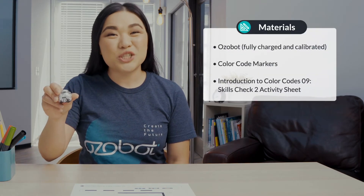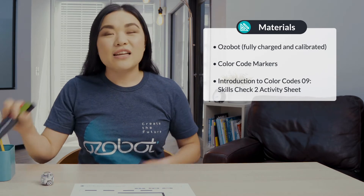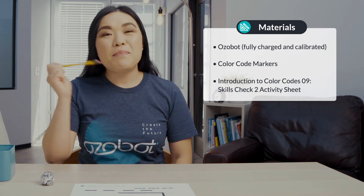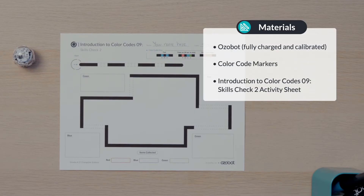For today's lesson you'll need an Ozobot fully charged and calibrated, color code markers, a pencil, and your Introduction to Color Codes Lesson 9 Skills Check activity sheet.